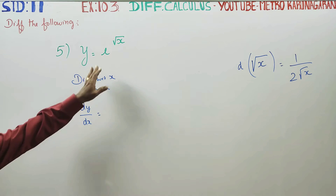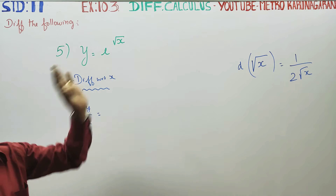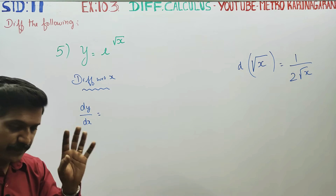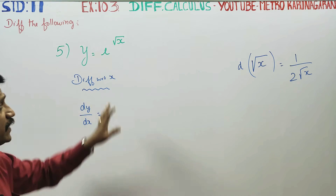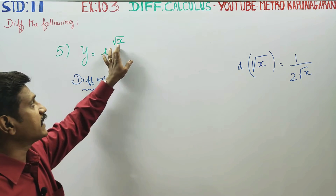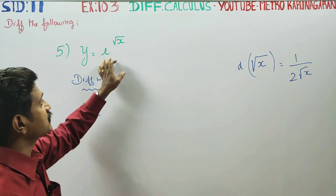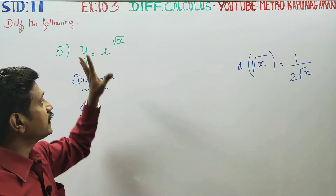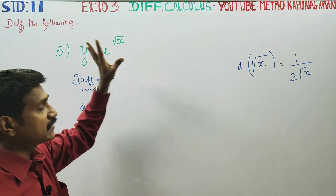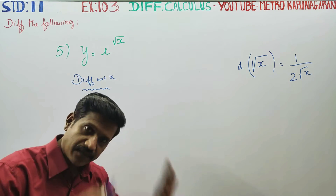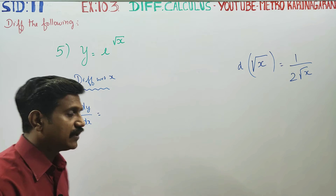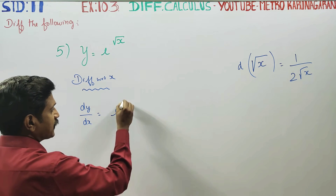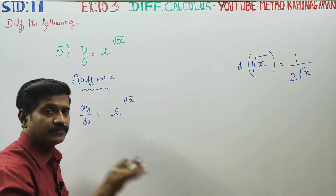E power x is the formula. When you differentiate e power x, the result is e power x itself. Similarly, e power function of x differentiates to e power function of x. So e power root x differentiates to e power root x as the same term.